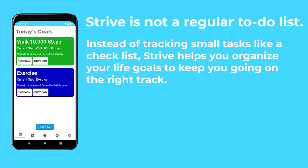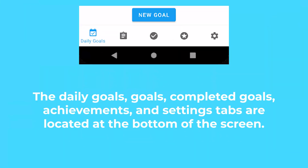Strive is not a regular to-do list. Instead, it is an app designed to track long-term goals and lifestyle goals and reward users for taking steps to complete them. The app has a few tabs: daily goals, goals, completed goals, achievements, and settings.